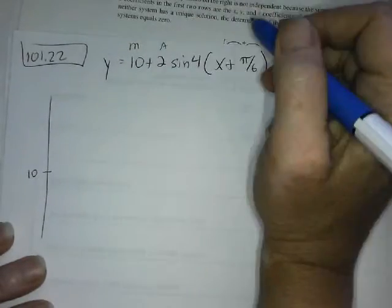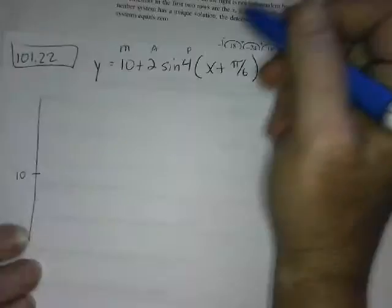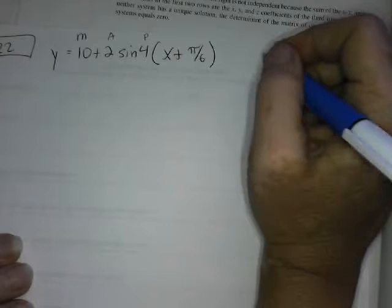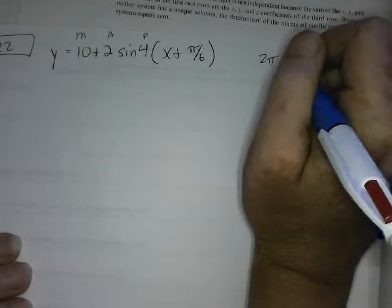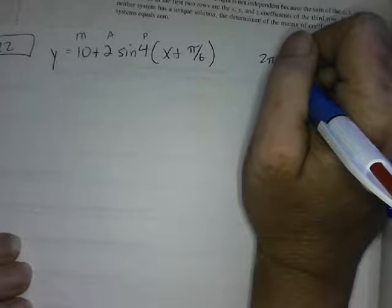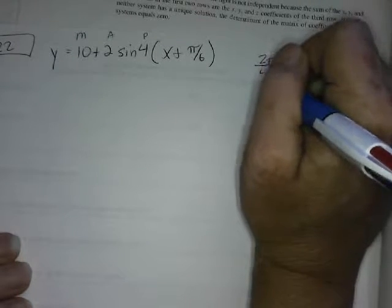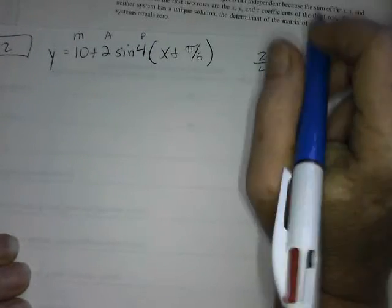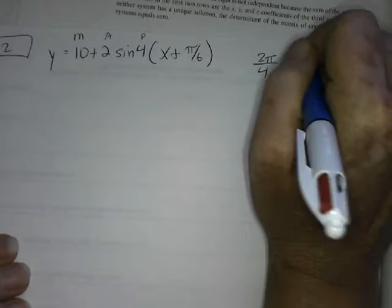The 2 gives me the amplitude. The 4 gives me the period. The period is actually given by the regular period of sine divided by that number. So, that will give me pi over 2. That's the period.